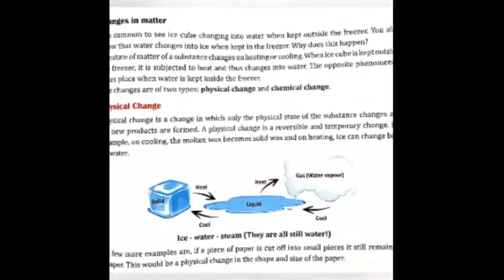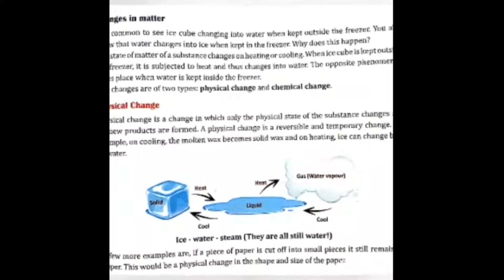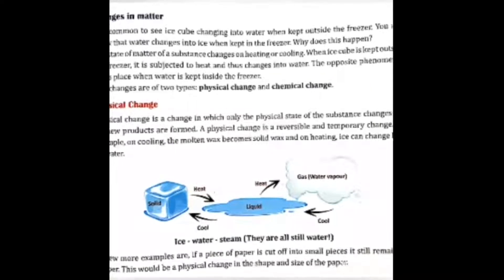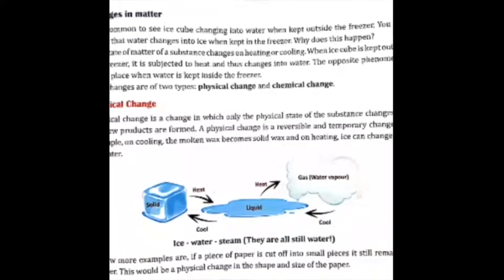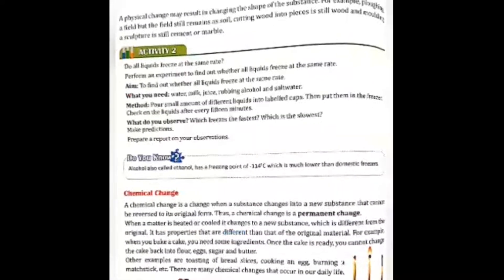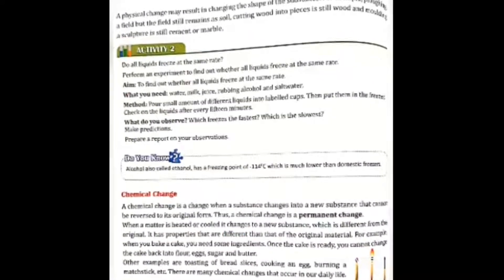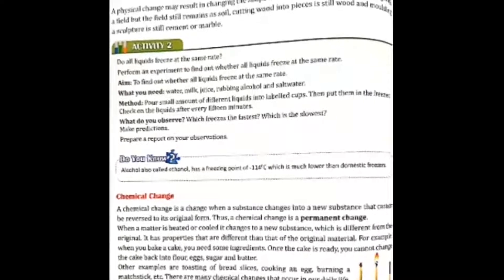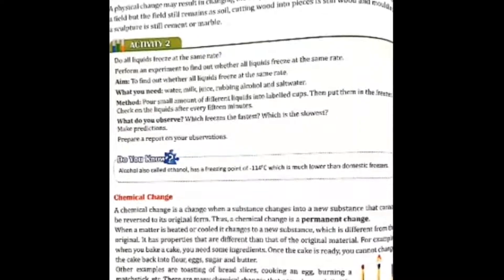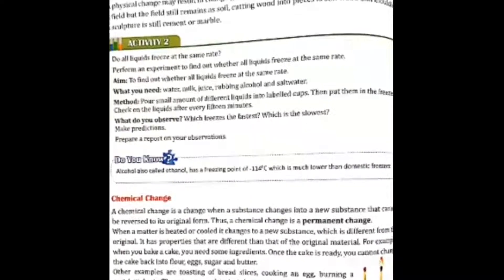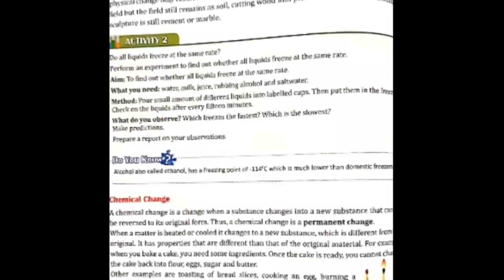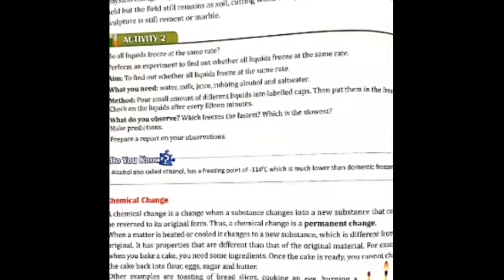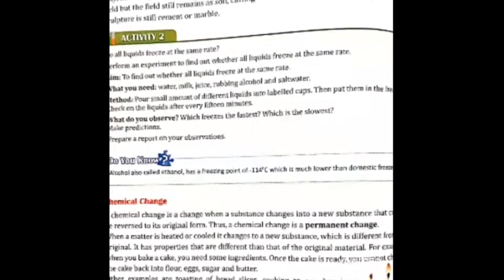Physical changes are the ones that happen around us where the changes are only physical. And chemical changes are those changes that are permanent and which we cannot reverse. We will understand this concept more deeply now.